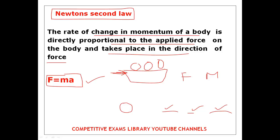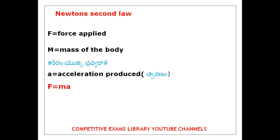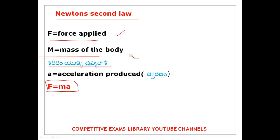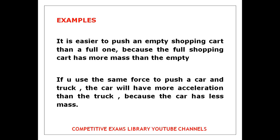This is Newton's second law. The formula is F = ma: F is force applied, m is mass of the body, and a is acceleration. It is easier to push an empty shopping cart than a full one, because the full shopping cart has more mass. You can explain this using Newton's second law formula.